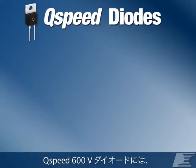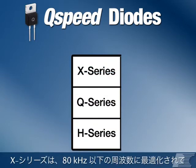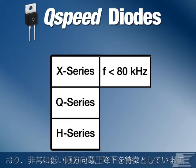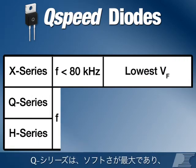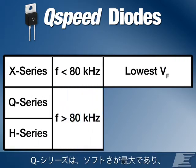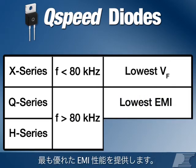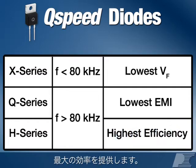Q-Speed 600V diodes are available in three families. The X-Series, optimized for frequencies below 80 kHz, has very low forward voltage drop. The Q-Series has the highest softness, giving the best EMI performance. The H-Series has the lowest QRR, providing the highest efficiency.